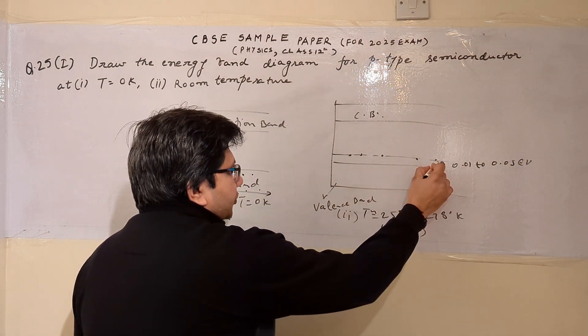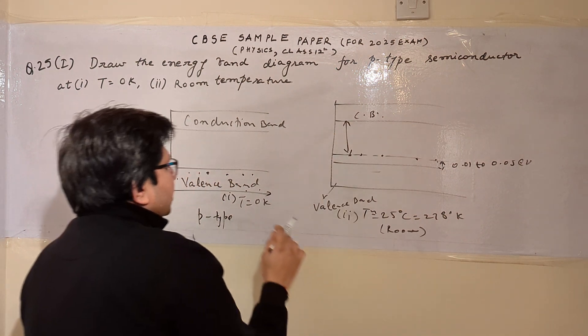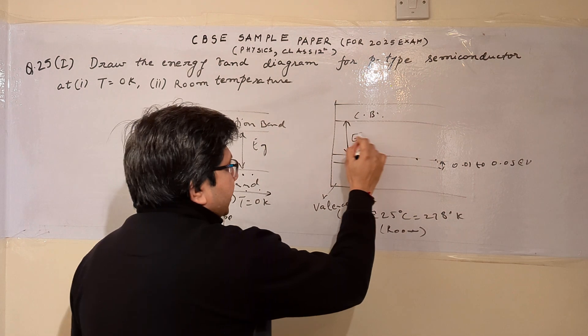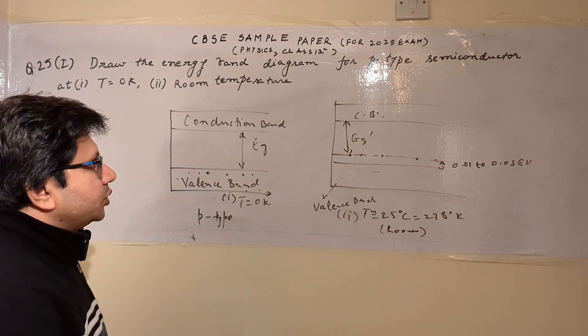So mainly the charge carriers reside here. So we can say that in this situation, the band gap reduces. The earlier band gap is this. For example, this is EG and this is EG dash. So EG dash is a bit less as compared to EG.